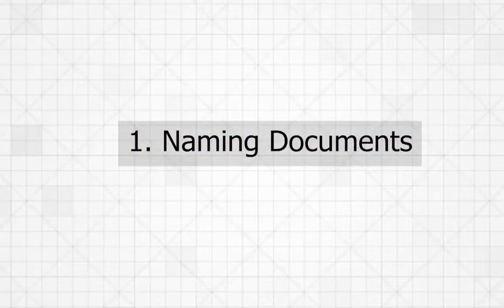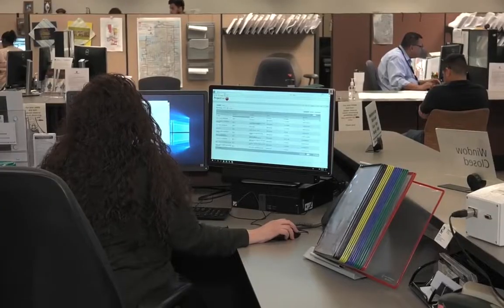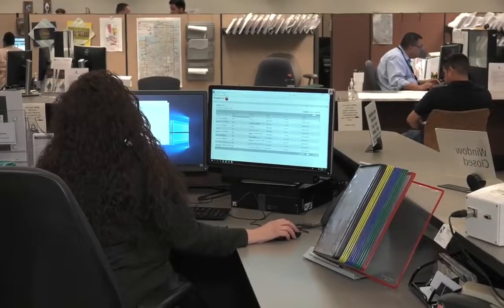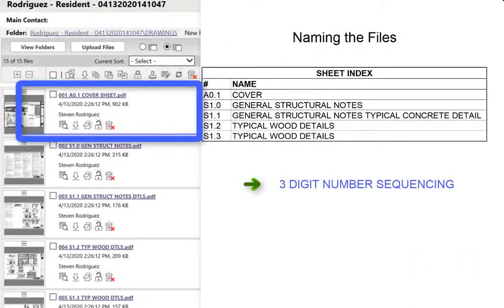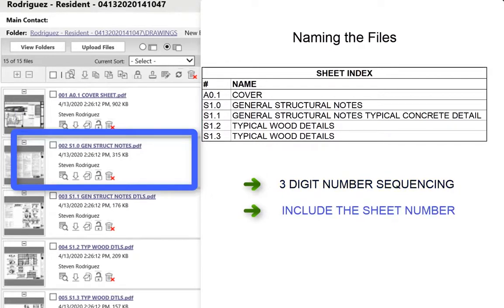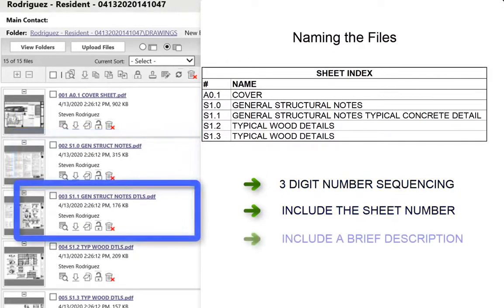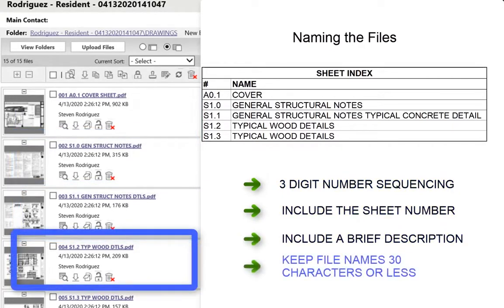First, naming the documents. Customers often do not follow the naming protocols for EPR, which makes it harder for the reviewer to find some of the documents in the submittal. Use three digits starting from 001, starting with the cover sheet, and continue to name the documents in numerical order. Include the sheet number and include a brief sheet description. Make sure the names are 30 characters or less.